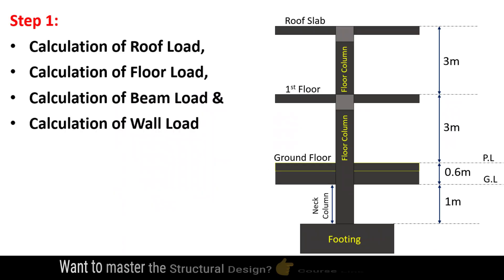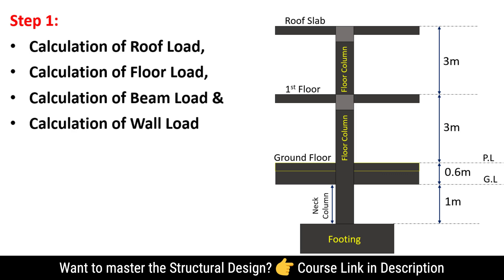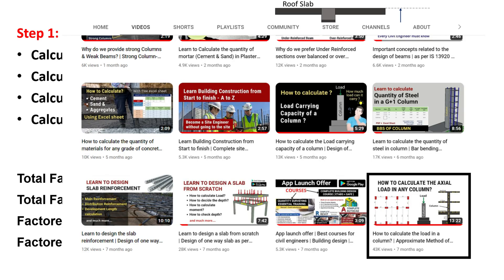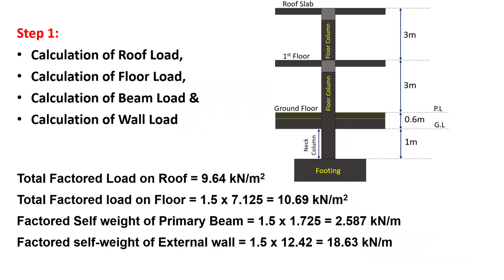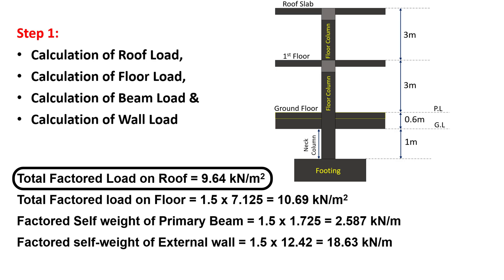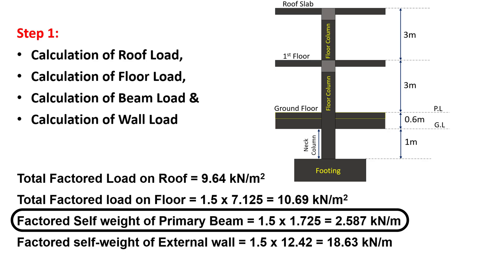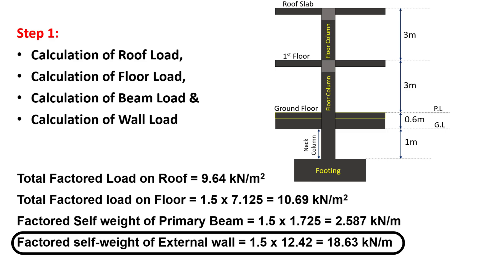The first step is to determine the roof load, floor load, self-weight of beams, and the walls that influence this column. As calculated in a previous lecture — the link is in the description — the total factored load on roof is 9.64 kN/m², the total factored load on floor is 10.69 kN/m², the factored self-weight of primary beam is 2.587 kN/m, and the factored self-weight of external wall is 18.63 kN/m.